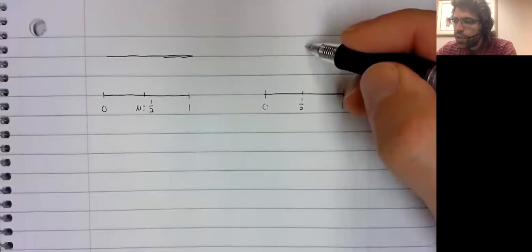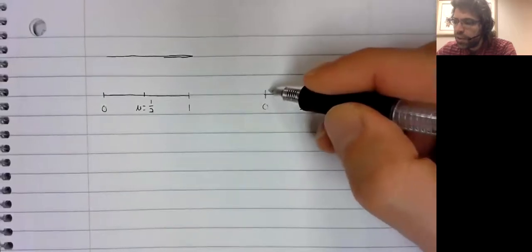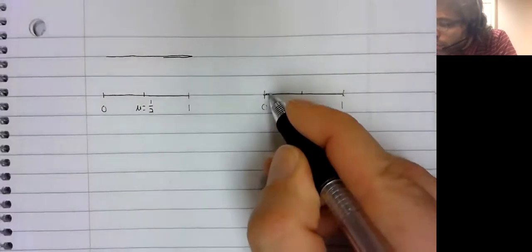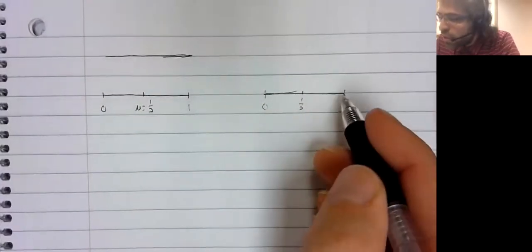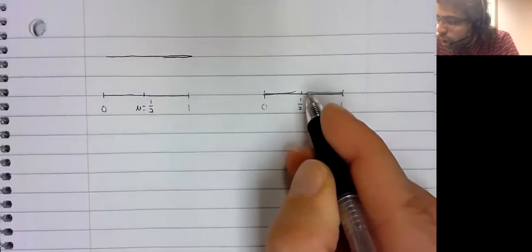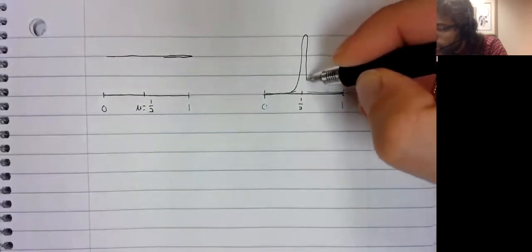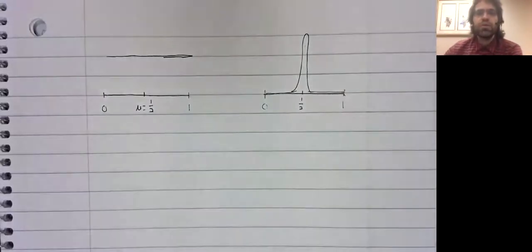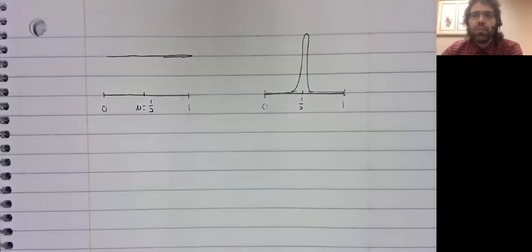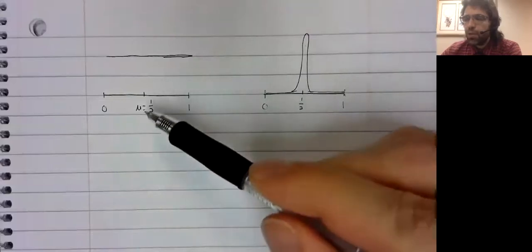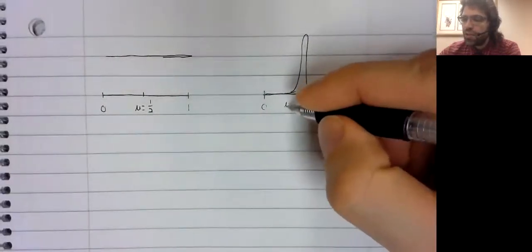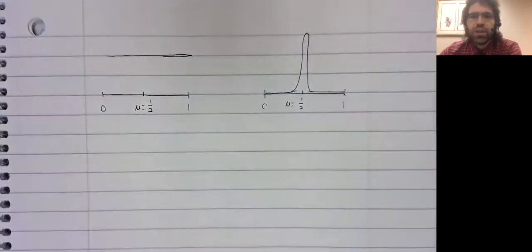And you could have another probability distribution where the mean and the median are both one half. A probability distribution that looks like that. And of course, although the mean and the median are the same in both cases, these probability distributions don't look anything like each other.